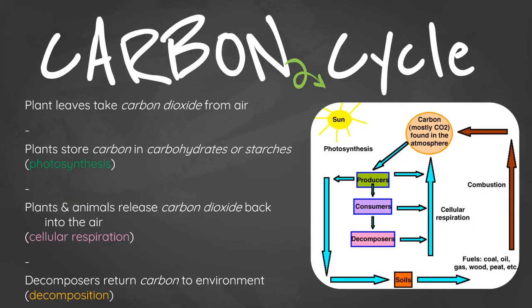Now moving on to the carbon cycle. Leaves of plants take carbon dioxide from the air and use the carbon in CO₂ to form carbohydrates or starches through photosynthesis — this is how plants make their own food. Plants and animals also release carbon dioxide back into the air through respiration, and decomposers return carbon to the environment through decomposition, feeding on dead animals and plants and releasing the stored carbon back to the environment.